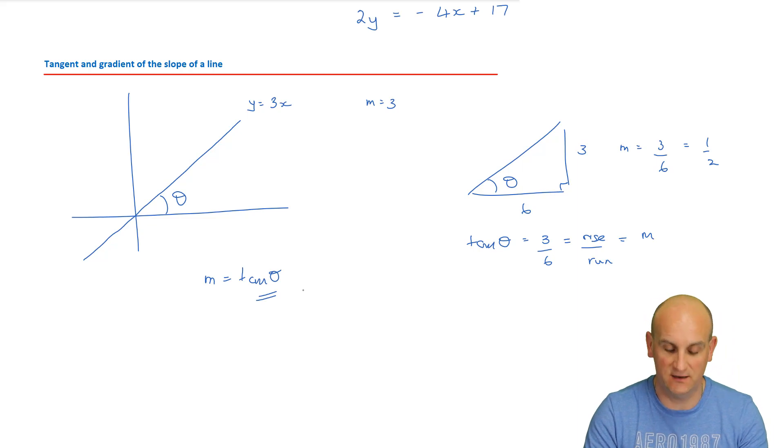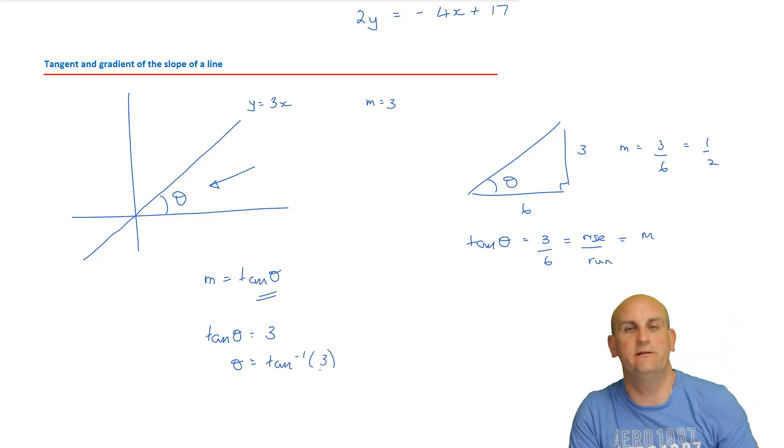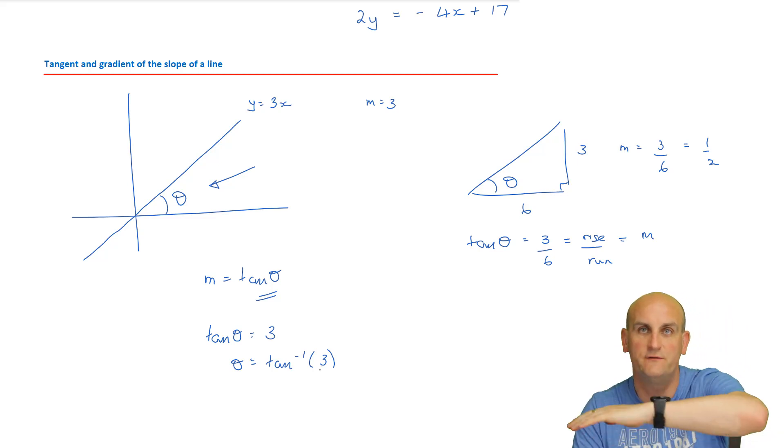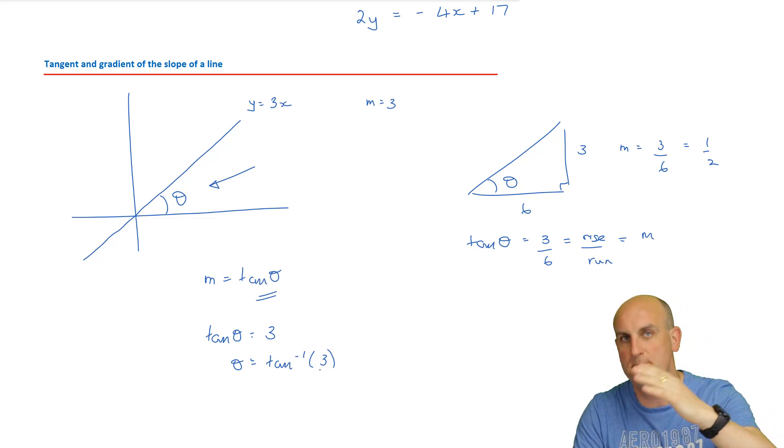I actually know that M is equal to tan theta. My gradient is equal to the tan of theta. So if I wanted to find this angle here for my example, I'd say, hold on a moment, I know that tan theta is equal 3. Theta is equal to the inverse tan of 3. And banging it to my calculator will give me my answer. If you're ever asked to find the value of the angle that a line makes with a horizontal, all you need to know is the gradient.